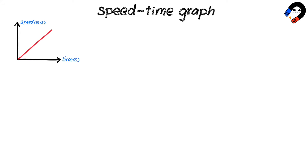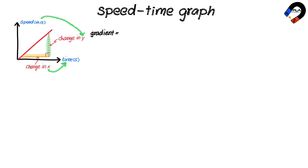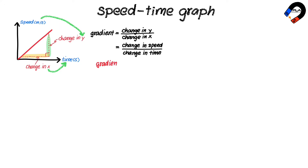In a speed-time graph, as shown here, we draw a right triangle. The x-axis represents time (change in x) and the y-axis represents speed (change in y). The gradient of a speed-time graph is the ratio of the change in y to the change in x — that is, the ratio of change in speed to change in time.